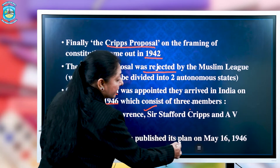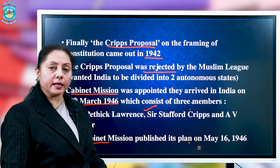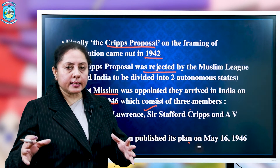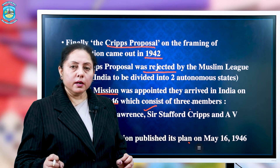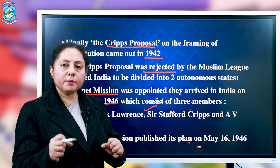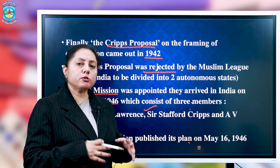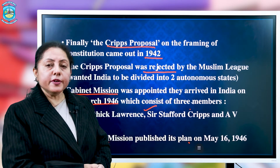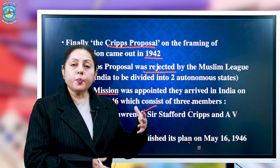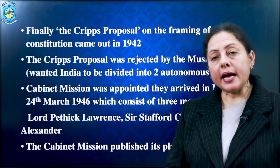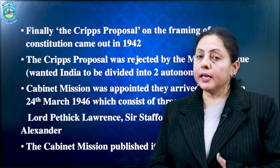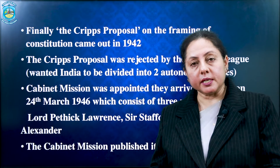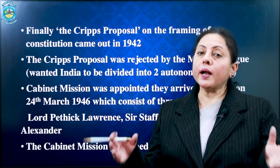Finally, the Cabinet Mission published its plan on May 16, 1946. They decided to form a loose centre, under which they proposed a separate constitution for Pakistan — that is, Balochistan, Punjab, and the North-West Frontier — and a separate constitution for Assam and Bengal, along with a centre with limited powers. This proposal was not accepted by either party. The plan envisioned a loose centre that would effectively divide into Hindustan, Pakistan, and Princestan. The Indian National Congress did not accept it because they wanted one united Hindustan.